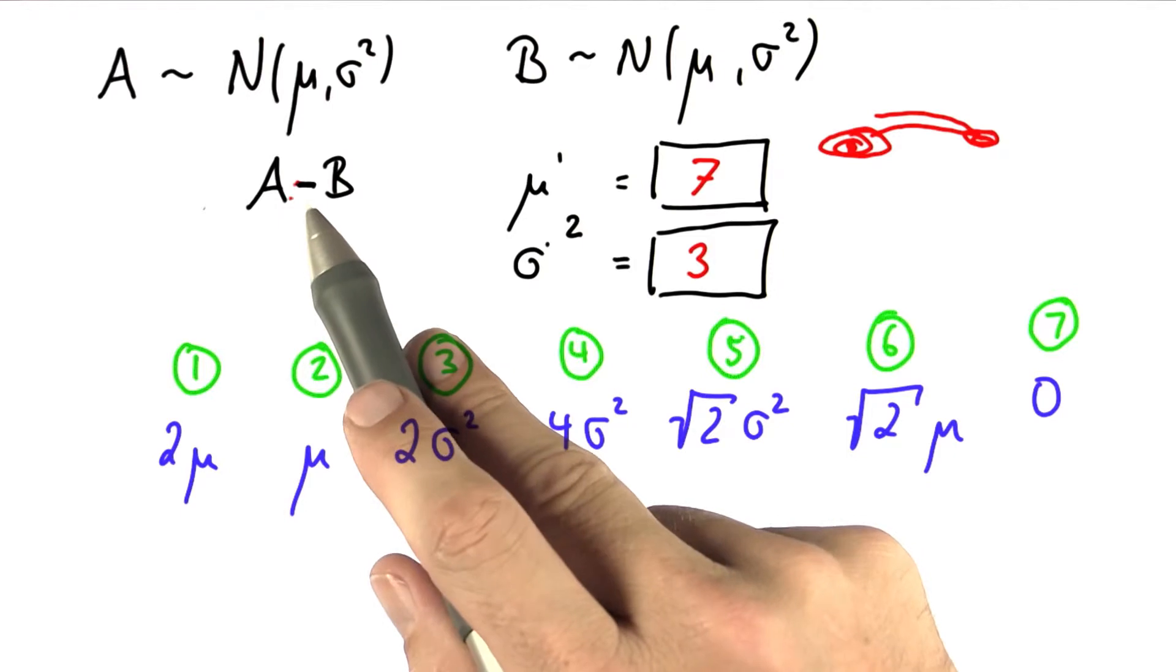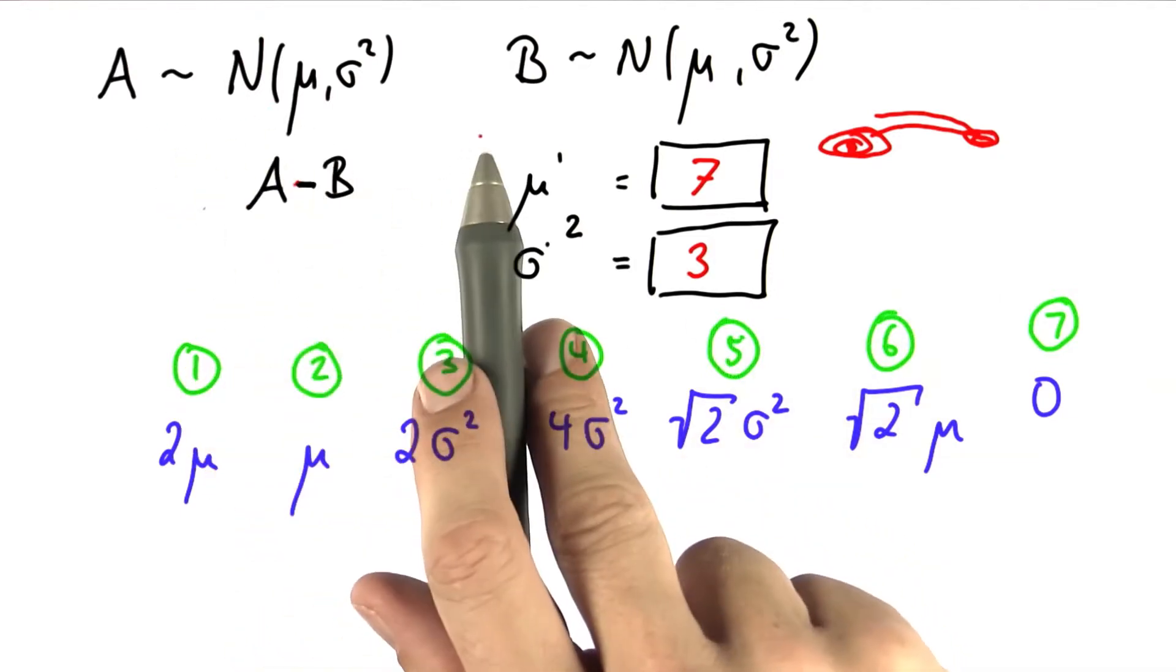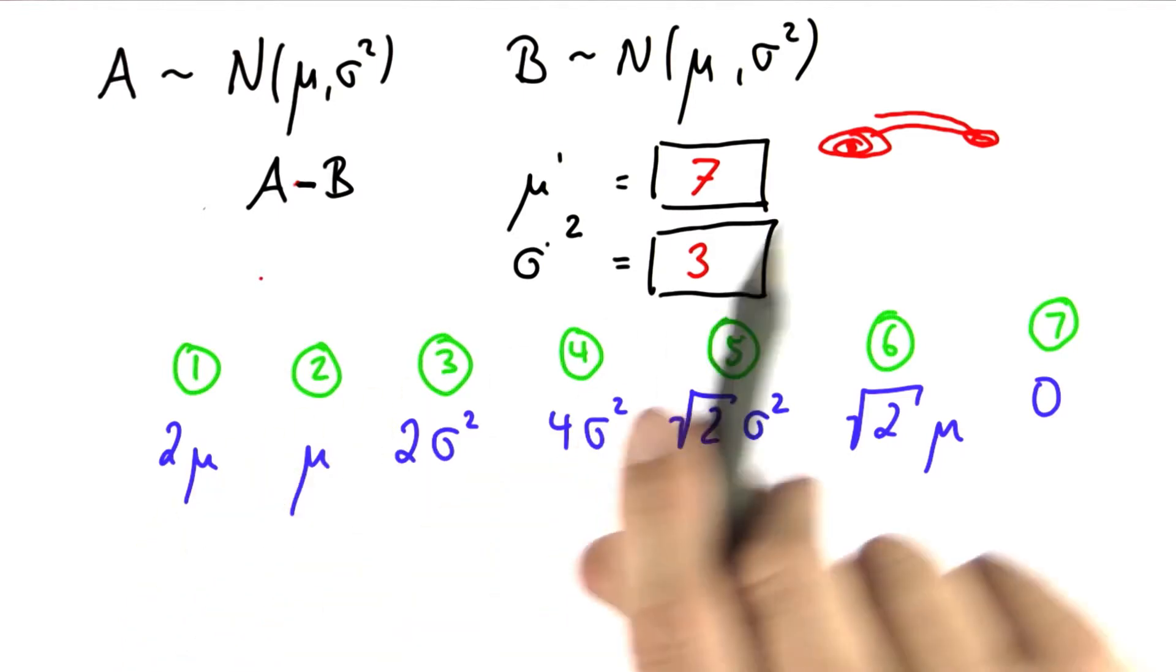So even though we substituted the plus sign by a minus sign, the uncertainty that comes in through each of these steps over here will add up, just the way it did before.